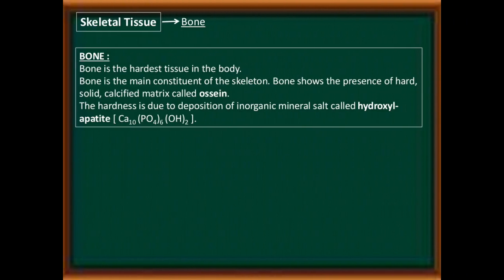Now, another type of skeletal connective tissue: bone. Bone is the hardest tissue in the body and the main constituent of the skeletal system. Bone shows the presence of a hard, solid, calcified matrix called ossein. The hardness is due to the deposition of inorganic mineral salts called hydroxyapatite.